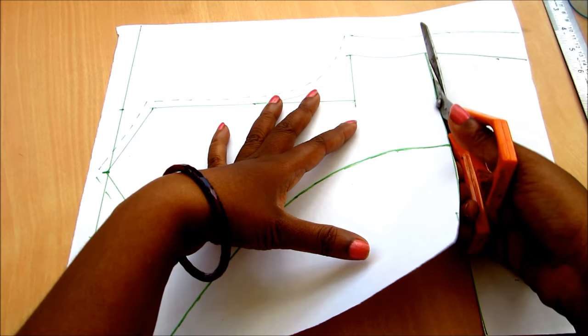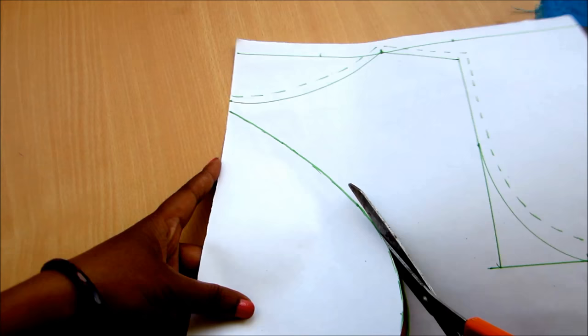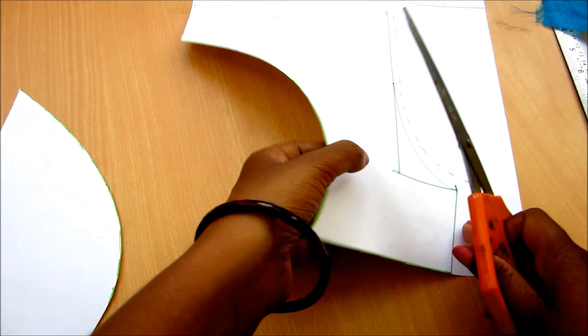It's up to you if you want to decrease in length of this shape, then you can give the seaming allowances. Then add that mass to this shape for the final finishing. Now done with the drafting of the main bodice of the back.